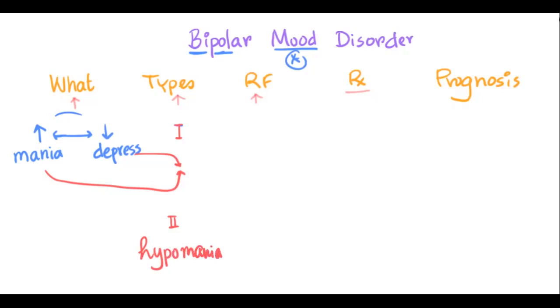So that is what type 2 bipolar mood disorder is. You have hypomania along with episodes of depression.